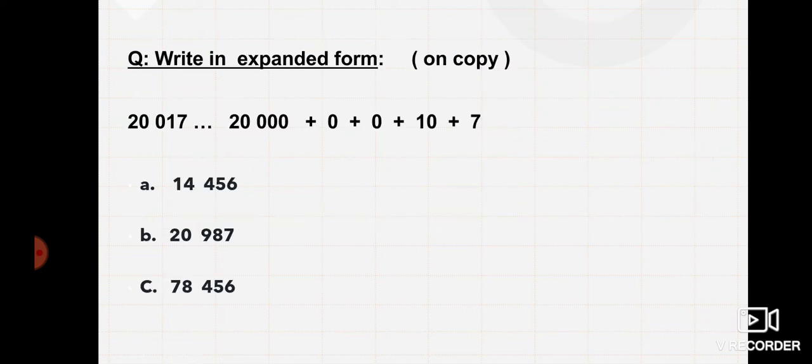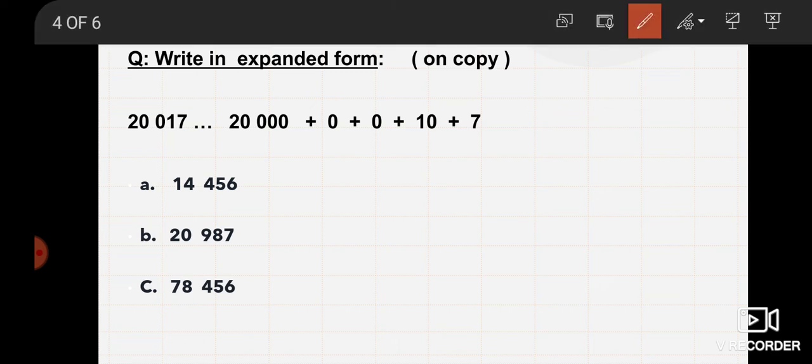So the next is write in expanded form. So students, what is expanded form? As from the name expand, it is clear that you have to expand the number. Expand means spread it. Now we have to see the number 20,017. So its easy way is that you can do this. First, you can do like 1, 2, 3, 4 digits.